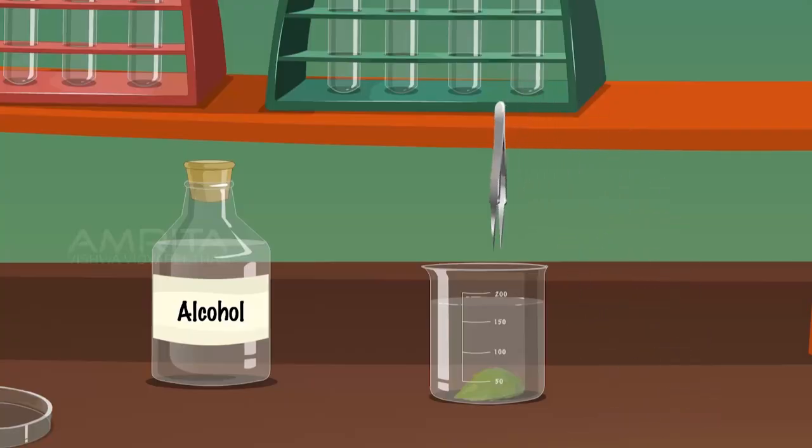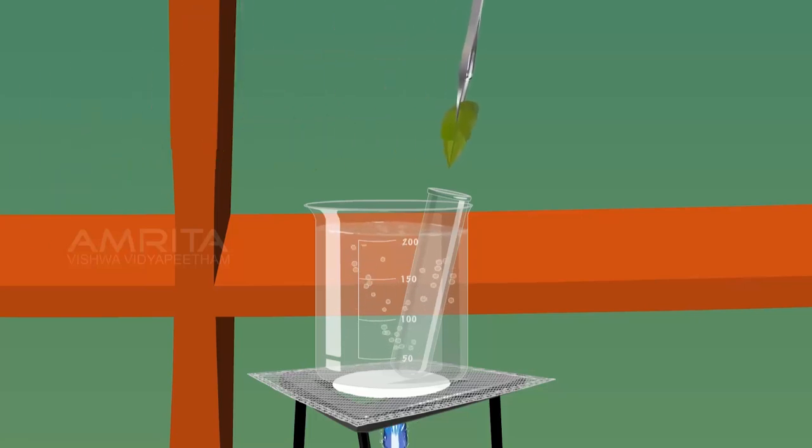Take the leaf from the beaker using forceps. Place the leaf in the boiling tube containing alcohol. Keep the boiling tube in the beaker till the leaf becomes colourless.